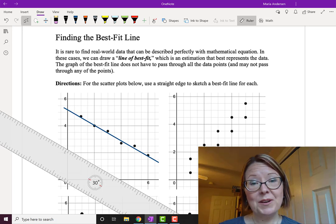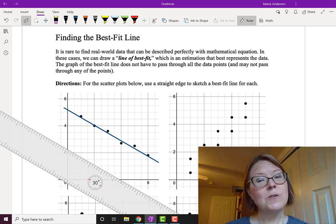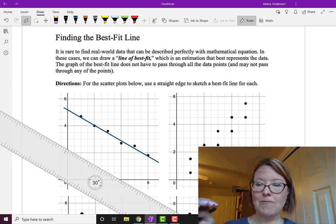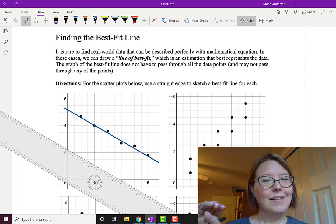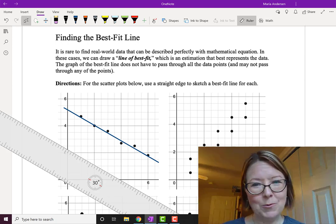That is really all there is to it of estimating a line of best fit. First position your straight edge so you have roughly the right slope and then move the straight edge till it looks like it sits with about half the points to the left and half the points to the right.